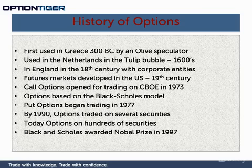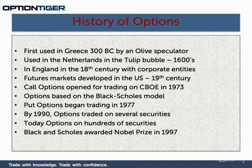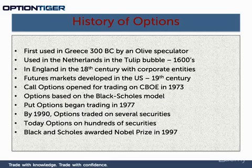By 1990, you had options traded on several securities. Today, we have options on hundreds of securities — commodities like gold, silver, and oil; currencies like the euro and the US dollar; and hundreds of stocks and indices as well. Options have become a very popular instrument in the last 20 years. The mathematicians Black and Scholes were awarded the Nobel Prize in 1997 for their Black-Scholes options pricing model.